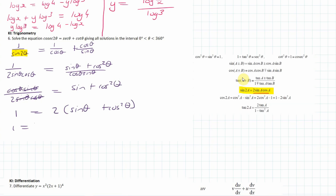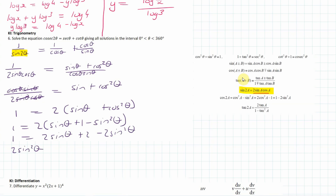We can change cosine squared θ into 1 minus sine squared θ, then multiply out to get 2 sin θ plus 2 minus 2 sin squared θ. Bringing everything to the left-hand side, I get 2 sin squared θ minus 2 sin θ minus 1 equals 0, and now I'm ready to solve the equation.